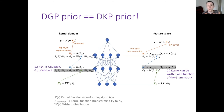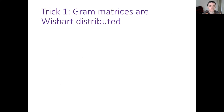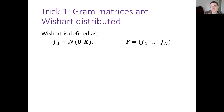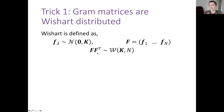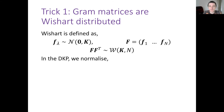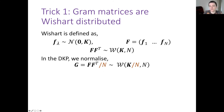This second property isn't universal but holds for most kernels we care about, including those used for infinite neural networks. For the first trick: the Wishart is defined by stacking vectors F (distributed as Gaussian with covariance K) and taking FF^T, which is Wishart distributed. In the deep kernel process, we divide FF^T by N and divide K by N so the resulting gram matrix has expectation equal to K — just keeping everything normalized as it flows through the network.